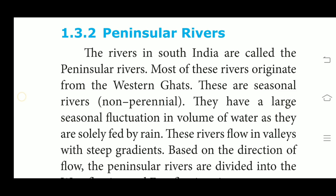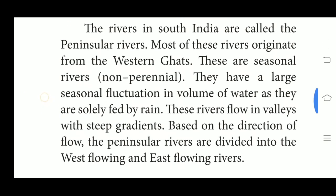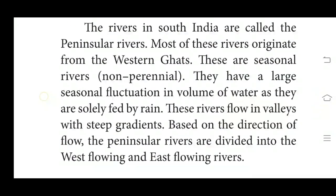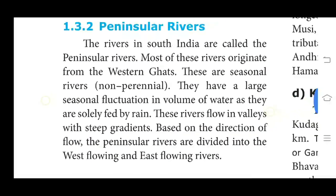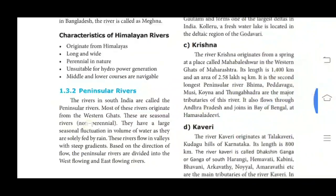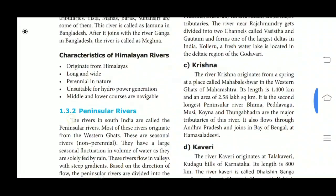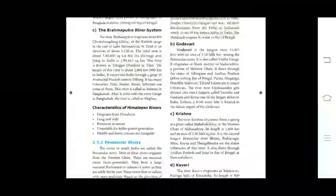These rivers flow in valleys with steep gradients. Based on the direction of flow, the Peninsular rivers are divided into west flowing and east flowing rivers.